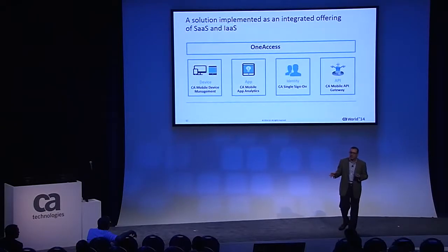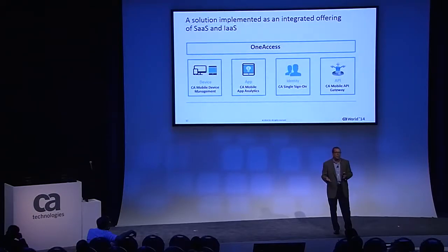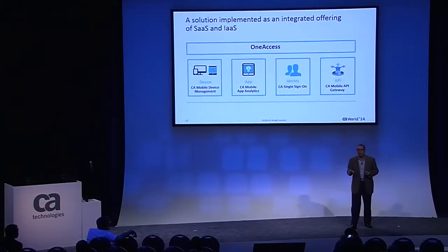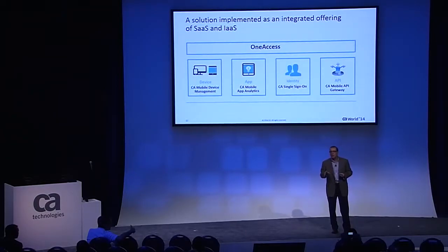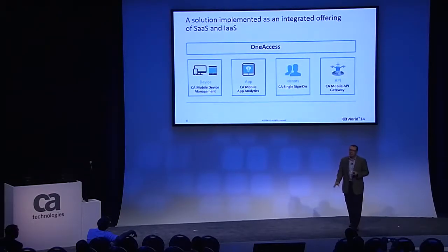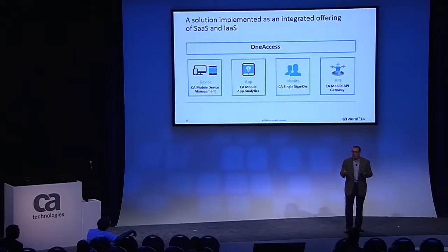At a high level, the mobile device management app is what we use to manage the device itself and to push the One Access application and keep it up to date as we develop new tiles and expose new enterprise applications on the mobile platform. Mobile application analytics is the other part of our mobility suite, used to monitor usage, performance, crash analytics, and user experience. CA single sign-on is our backbone single sign-on solution. And the mobile API gateway is the secret sauce that lets us consolidate all native, browser-based, and hybrid applications into one consistent, secure UI with rapid deployment.